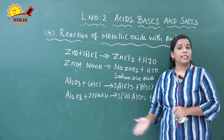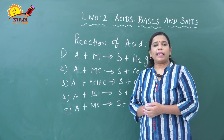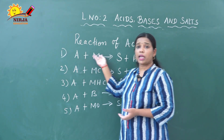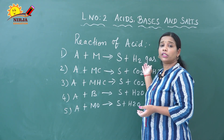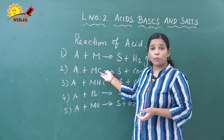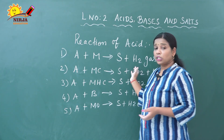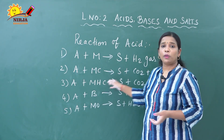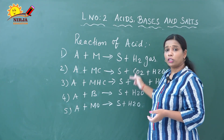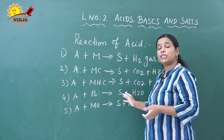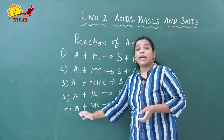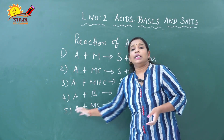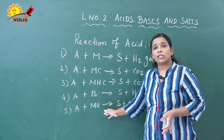Now here is a quick recap of the reactions of acid — the 5 chemical properties. First: acid reacts with metal to produce salt and hydrogen gas, confirmed by the pop test. Second: acid reacts with metal carbonate to produce salt, carbon dioxide, and water — CO₂ confirmed by lime water test. Third: acid reacts with metal hydrogen carbonate (bicarbonate) to produce salt, carbon dioxide, and water. Fourth: acid reacts with base to produce salt and water — this is called a neutralization reaction. Fifth: acid reacts with metal oxide to produce salt and water, where the metal oxide acts as a basic character. In this category we also discussed amphoteric oxides.